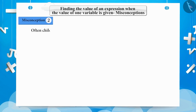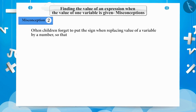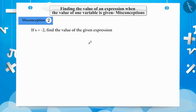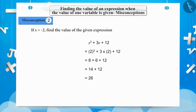Misconception 2: Often, children ignore the sign of the numbers while replacing a variable by its numeric value, and as a result the answer goes wrong. If s equals minus 2, find the value of the expression s cubed plus 3s plus 12. Children solve it ignoring the negative sign: 2 cubed plus 3 multiplied by 2 plus 12 equals 8 plus 6 plus 12 equals 26. The answer of 26 is incorrect.